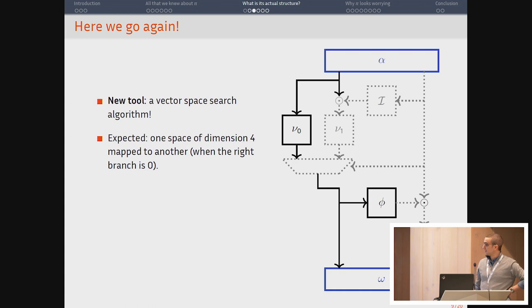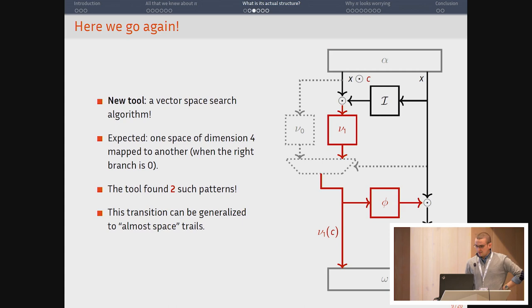So I was very happy because I thought I had a nice way to test this algorithm because I knew that in pi there was one such transition. If you set this branch to zero, this is a multiplexer which selects the output of this component when this one is equal to zero and this one otherwise. So basically you have that when this guy takes all possible values, here you get a vector space of dimension 4 and here a vector space of dimension 4. So I was expecting to find one such transition. But actually I found two.